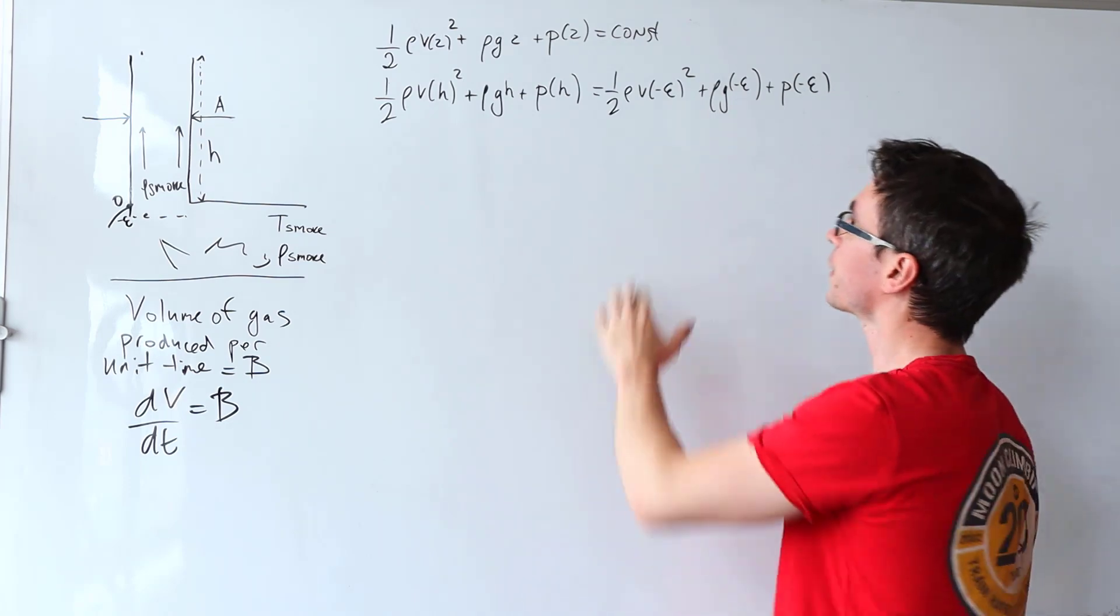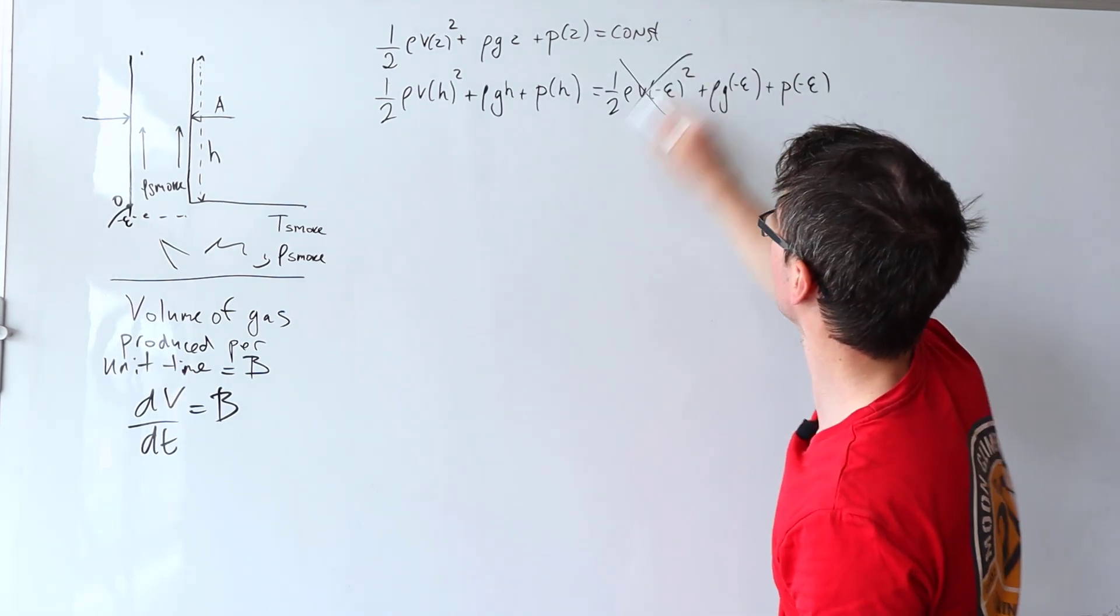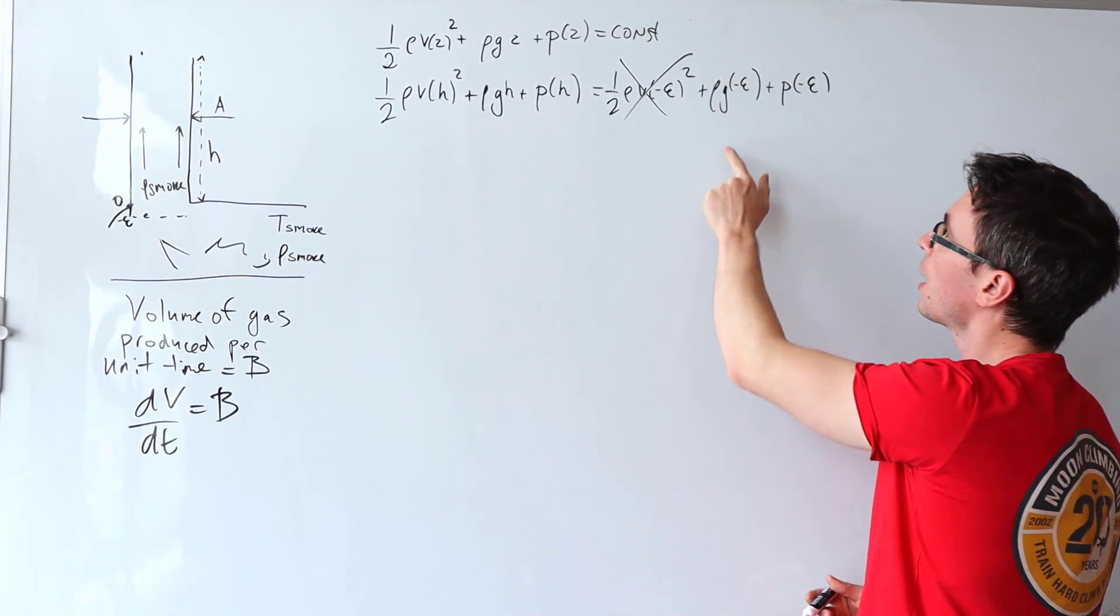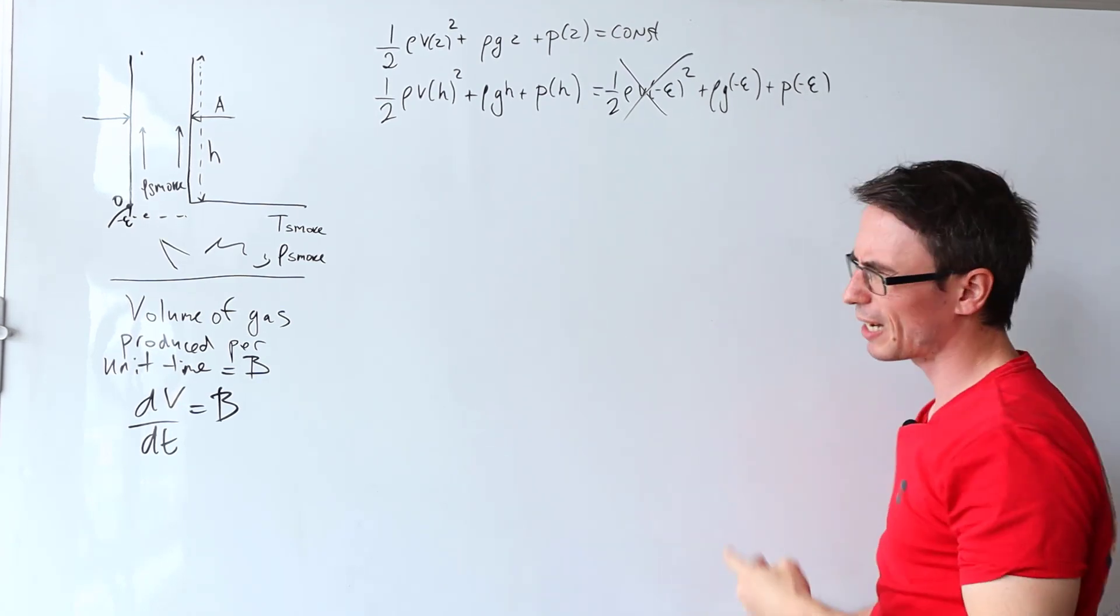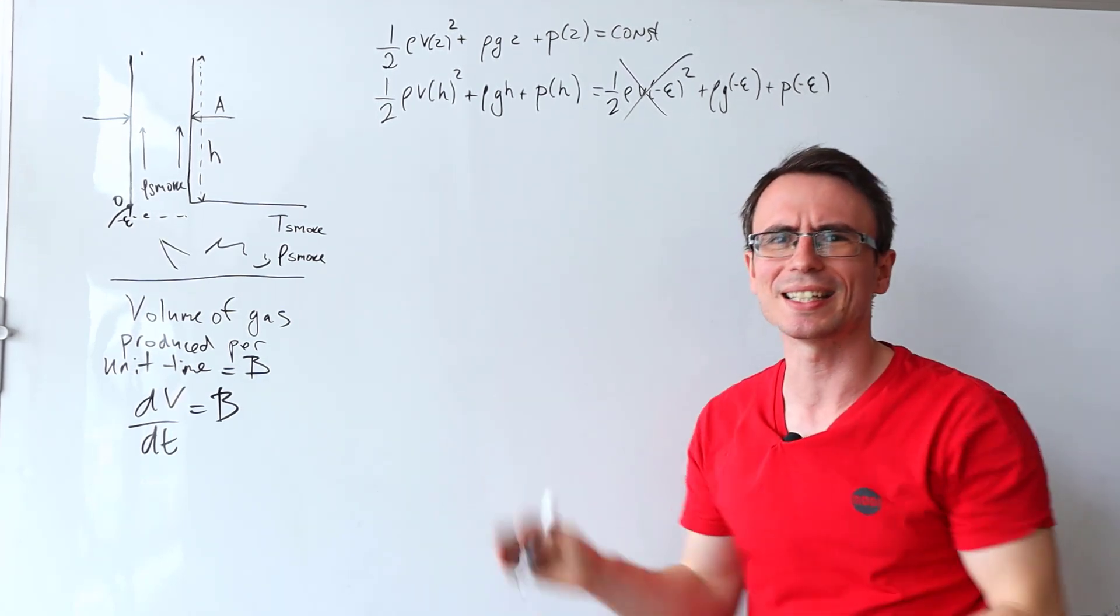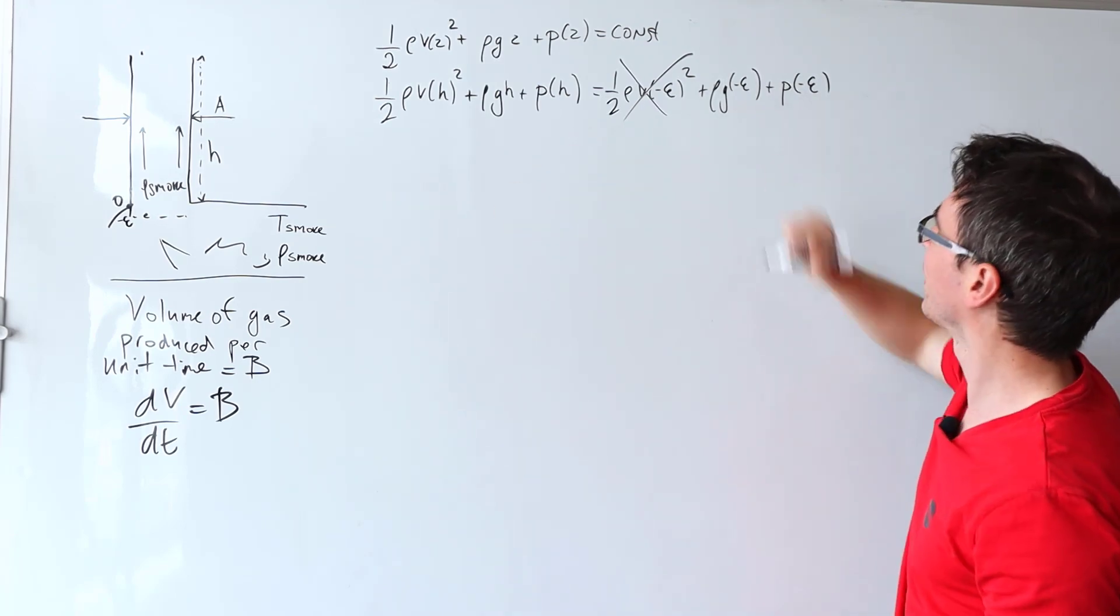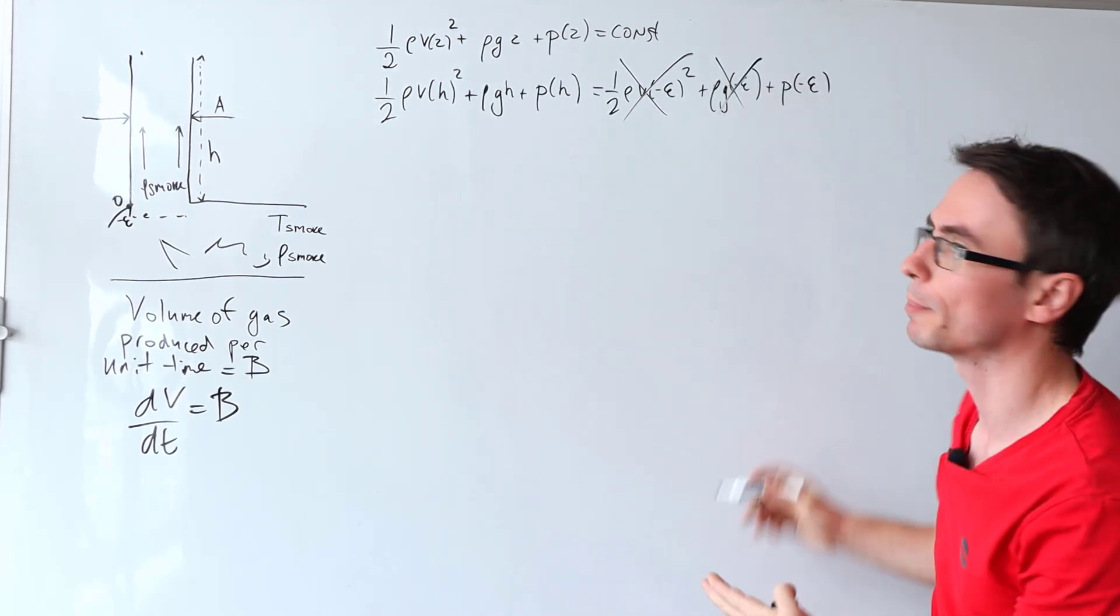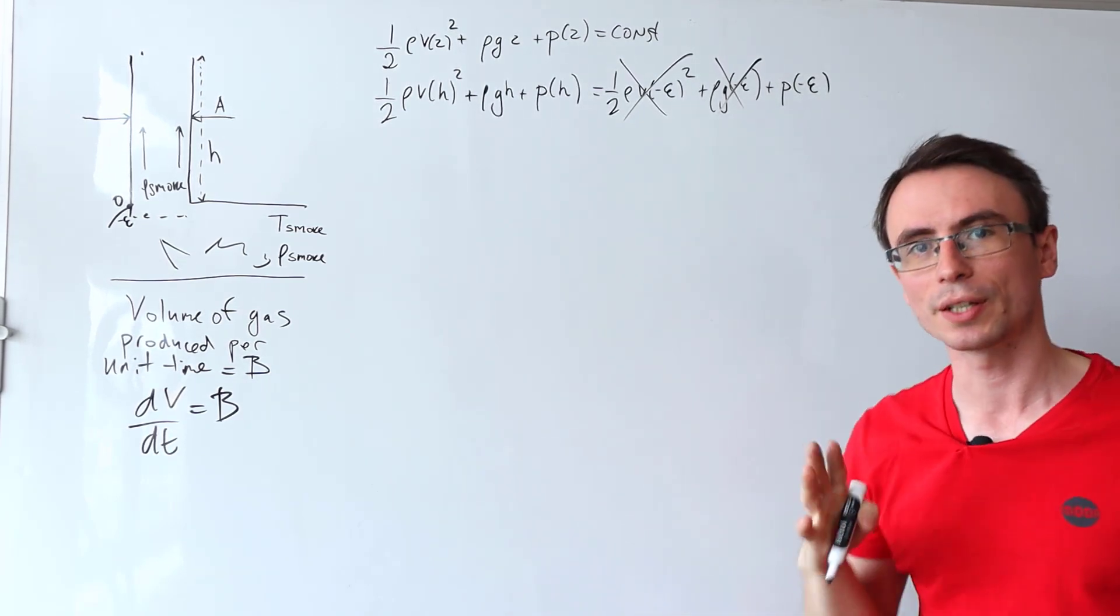Okay, so the question says that the speed is essentially zero inside of the furnace, so I'm going to essentially ignore this term. And we also have rho g times minus epsilon. Now if minus epsilon is a tiny tiny number, I don't know minus 0.0001 or something like that, then this term here will essentially be very very close to zero, so I'm going to ignore that as well.